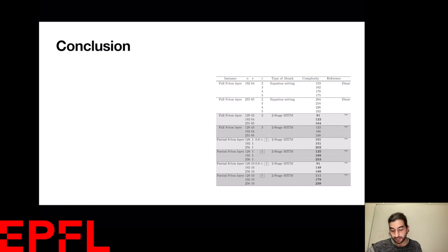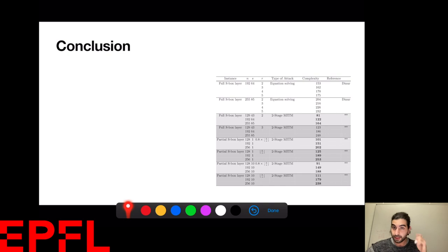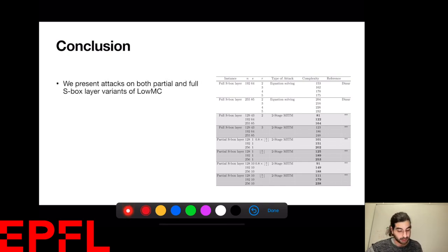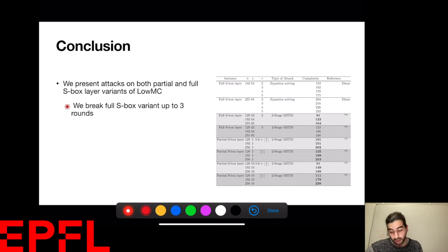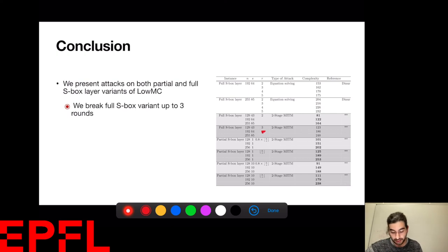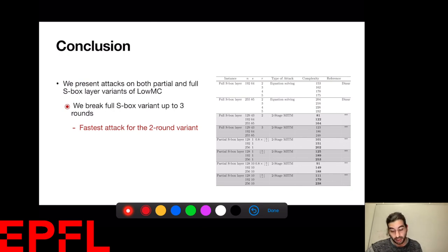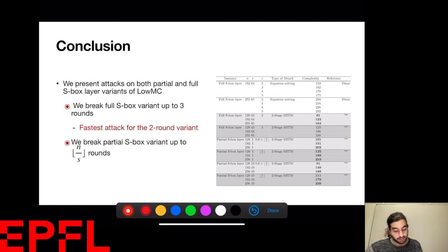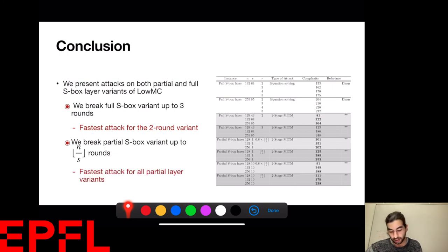Let's conclude. In the complexity table in the paper, for the full S-box variant we can break it up to three rounds. The NURS three-round attack is still faster than ours, but for the two-round version our attack is the fastest so far. For the partial S-box layer — the most interesting part of this work — we can break up to N/S rounds, which had not been done before, and for both 0.8·N/S and N/S round counts we obtain faster attacks.